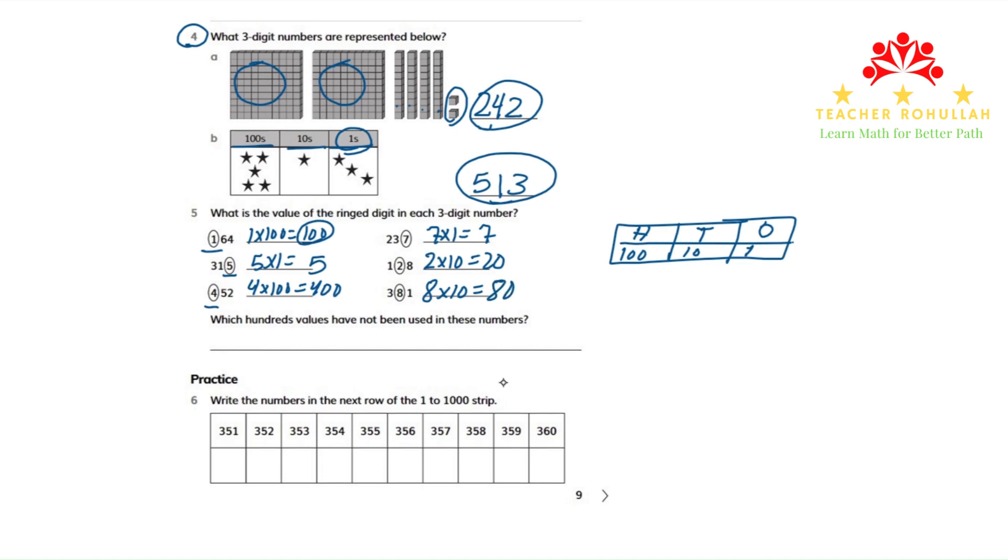In the second part of question 5, it says which 100s values have not been used in these numbers? In these numbers, we have not used 200s and 300s. So 300 and 200 are not used in these numbers.